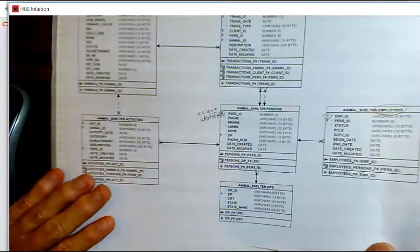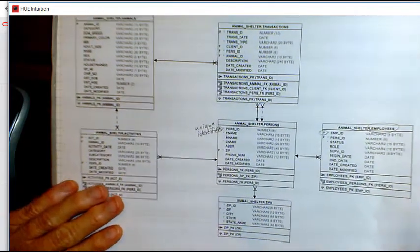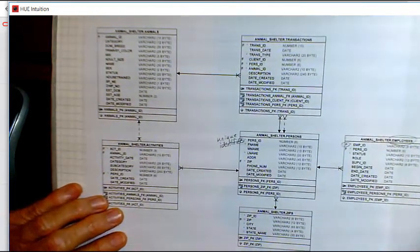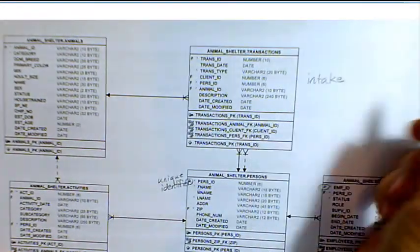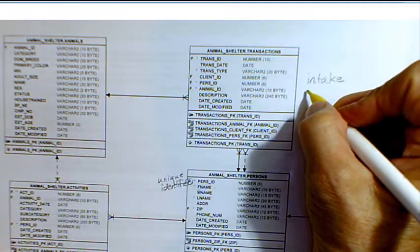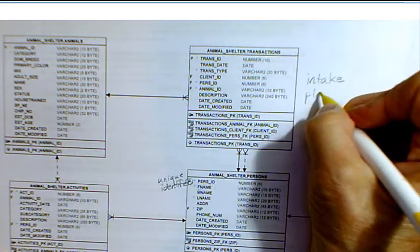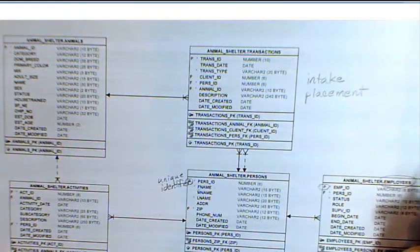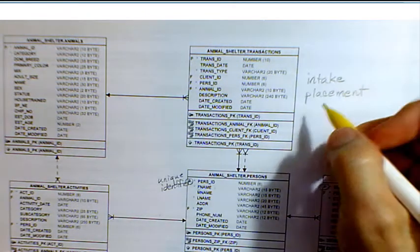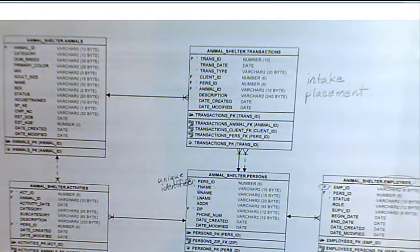If we look at transactions, there are things that we want to keep track of that happen at the shelter. We have things such as intake: an animal is brought to the shelter, and we take it in. We have things such as placement where somebody has adopted, chosen to adopt an animal, so we're transferring them out to that home.